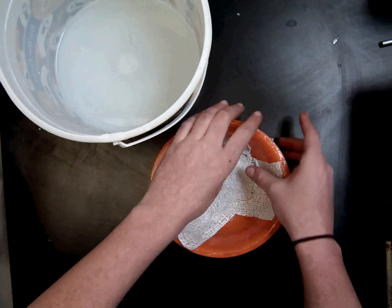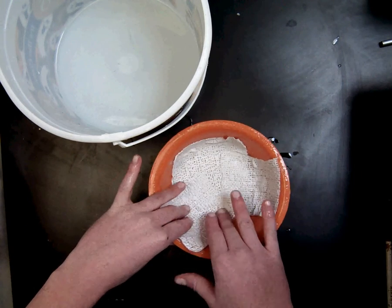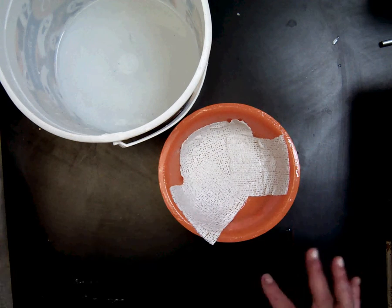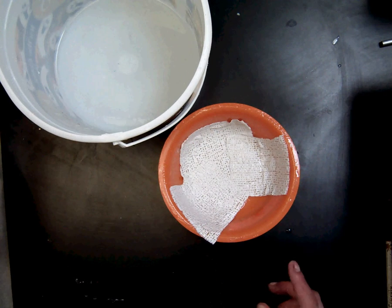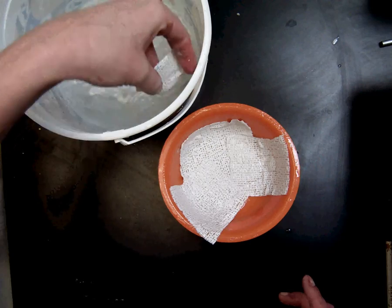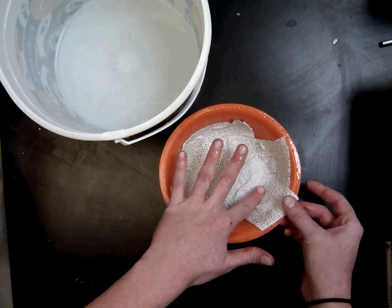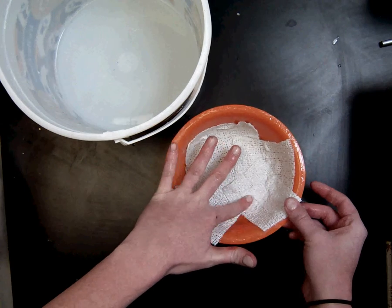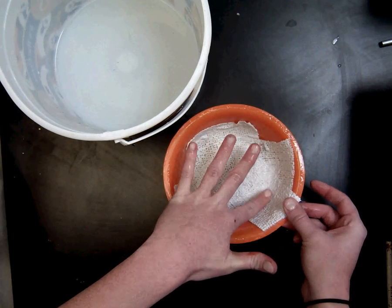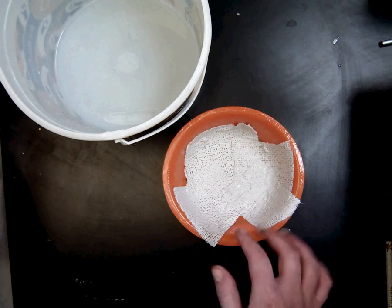If it bends and makes a few creases, that's okay. We will flatten it out later. If it goes a little bit over the edge, that is also okay. But you don't want it to go too much over the edge. And pushing it so that it goes into the crevice of the bowl. We don't want any slack.